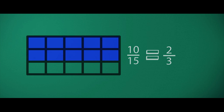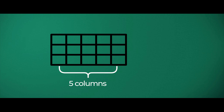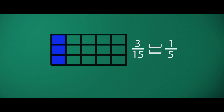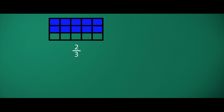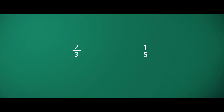Now we will present one-fifth. Out of five columns, we filled just one column. How many grids can you see there? Let's count together: one, two, three. Three grids out of 15 are filled. That means 3/15 is an equivalent fraction of one-fifth. Now children, we filled in two-thirds and we filled in one-fifth of the fraction.